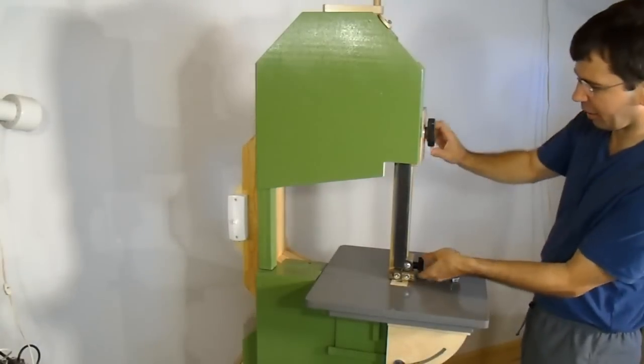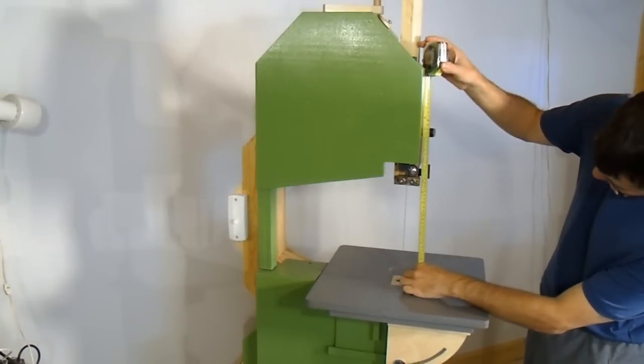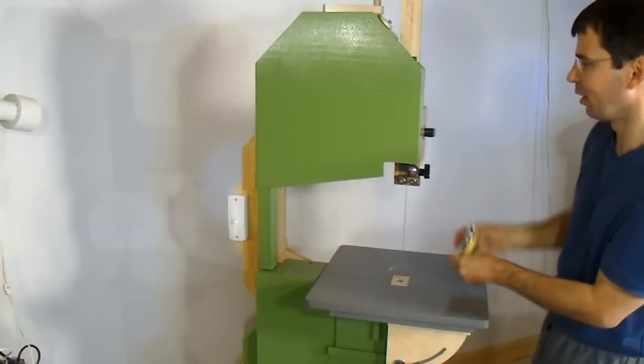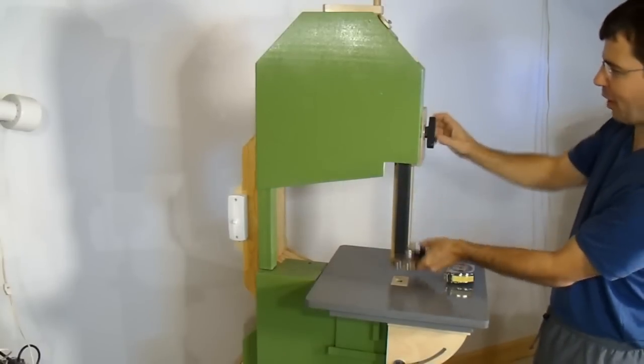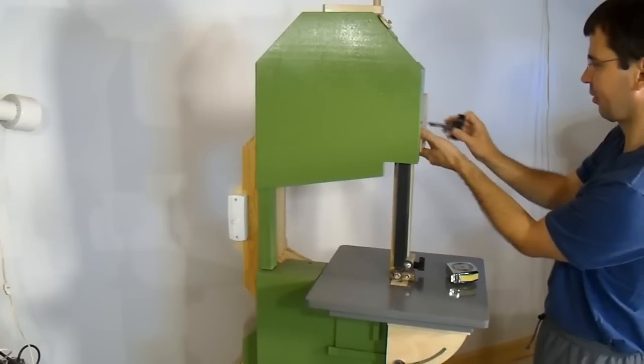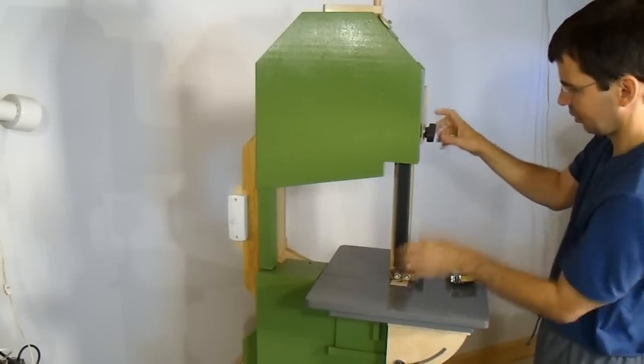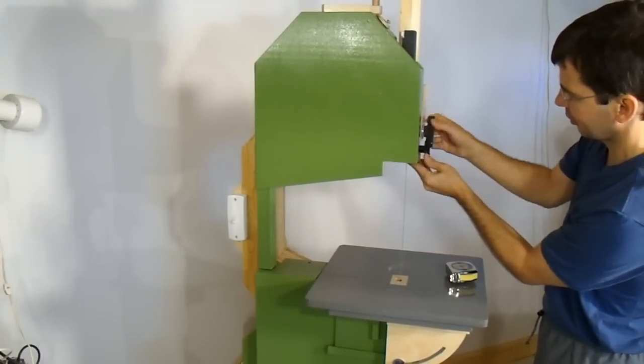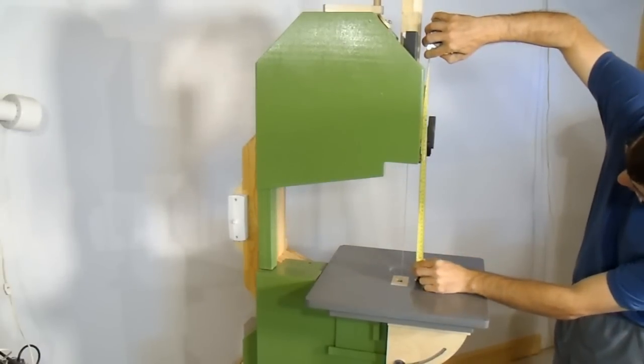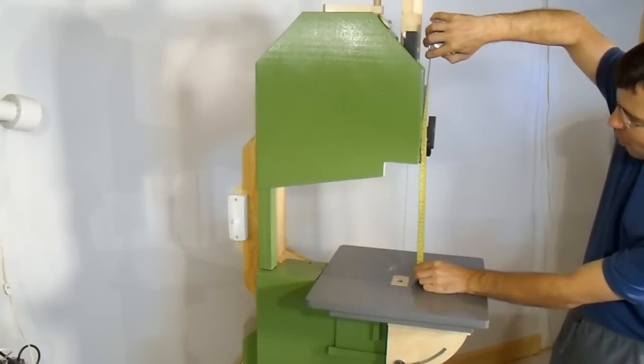On this saw I can move the upper blade guide like this to a distance that is 24 centimeters or over 9 1⁄2 inches above the table. But I can go further than that because I can take this block off and reposition it higher. And now that blade guide goes up as far as 30 centimeters or 11 and 3 quarters of an inch. Almost 12 inches.